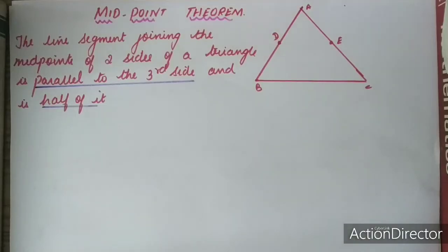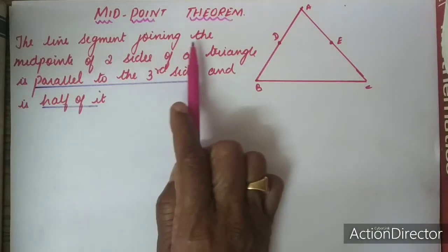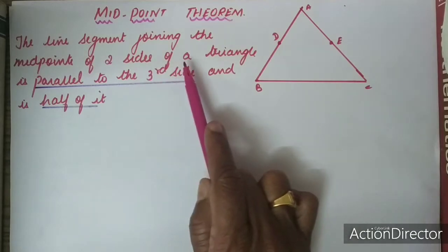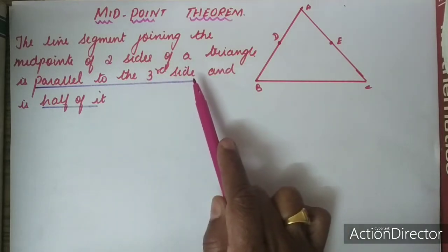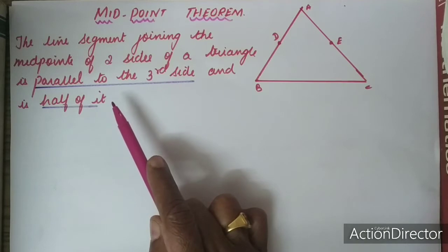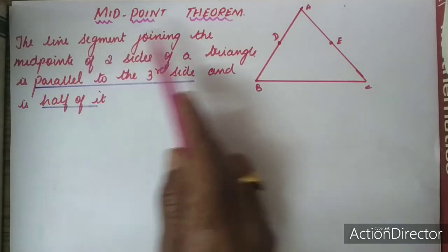Good morning children. Today let us see one most important theorem: the midpoint theorem. The line segment joining the midpoints of two sides of a triangle is parallel to the third side and is half of it. So what is given in the question?